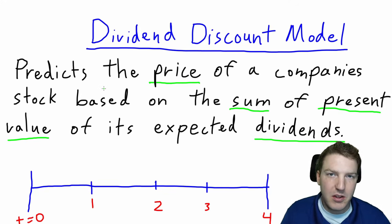Hey guys, the dividend discount model is actually a really easy concept to understand if we break it down simply. So let's get started with the definition. The dividend discount model predicts the price of a company's stock based on the sum of the present value of its expected dividends.